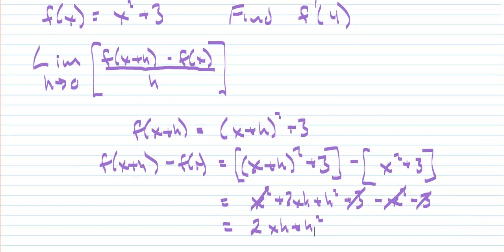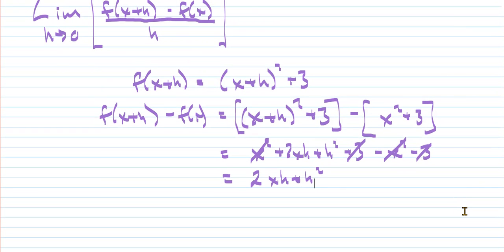Well, the next part of the definition of the derivative is to divide all of this by h. So we want to take our f of x plus h minus f of x and divide it by h. So that would be 2xh plus h squared divided by h.